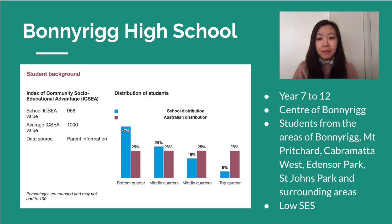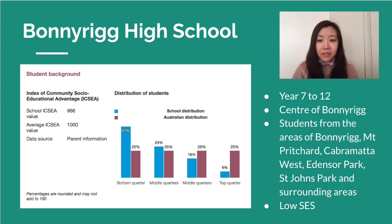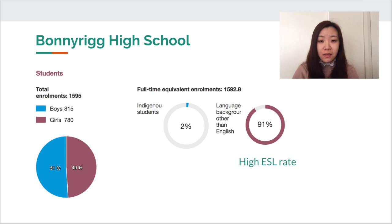The school selected for the implementation of this program is Bonnywick High School, catering for years 7 to 12. It is located at the centre of Bonnywick, with students from Bonnywick, Mount Pitchard, Capermata West, Addison Park, St. John's Park and surrounding areas. 47% of students are from the bottom quarter. We have chosen this school as it holds a very high percentage of students from language backgrounds other than English, approximately 91%. With this high multicultural diversity, there is a strong focus on cultural inclusion and the school complies with the multicultural education policy in providing teaching and learning programs that develop intercultural understanding.